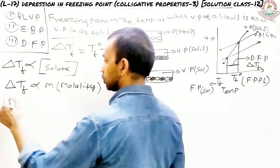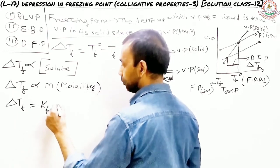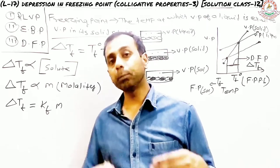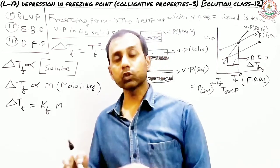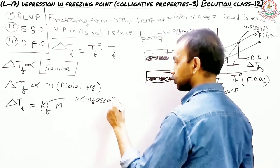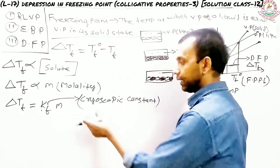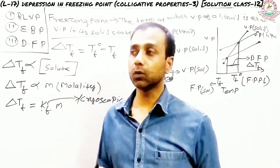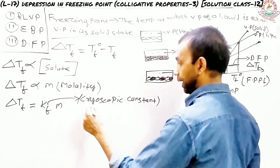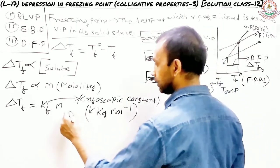So ΔTf is equal to Kf multiplied by molality, where Kf is a constant. In boiling point elevation there was Kb, called the elevation constant. Here it is called the depression constant, or more scientifically, the cryoscopic constant. The unit of Kf is Kelvin·kg per mole. I will do a separate lecture on the units of Kb and Kf.